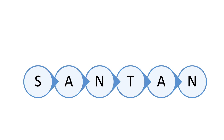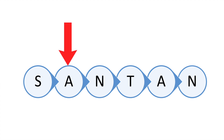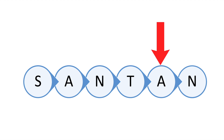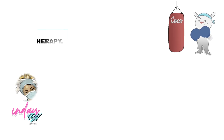So that is the SANTAN mnemonic: S for stomatitis and xerostomia, A for alopecia, N for nausea and vomiting, T for thrombocytopenia and anemia, A for anorexia, and N for neutropenia.